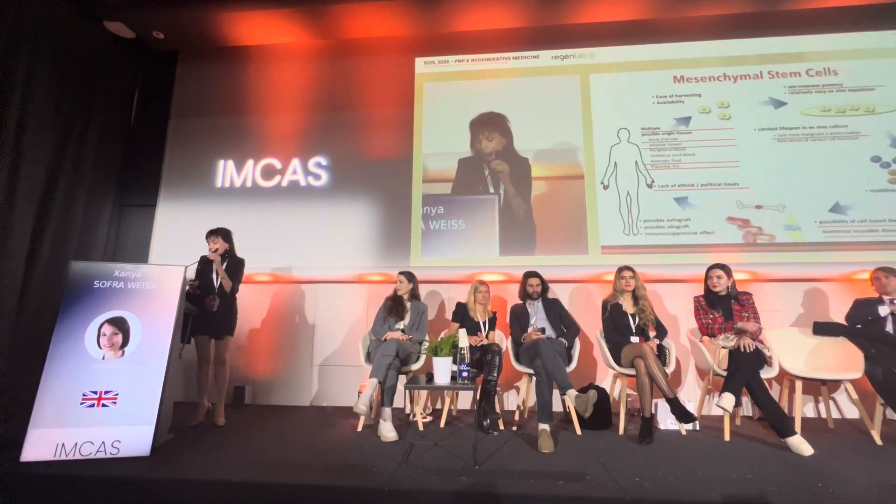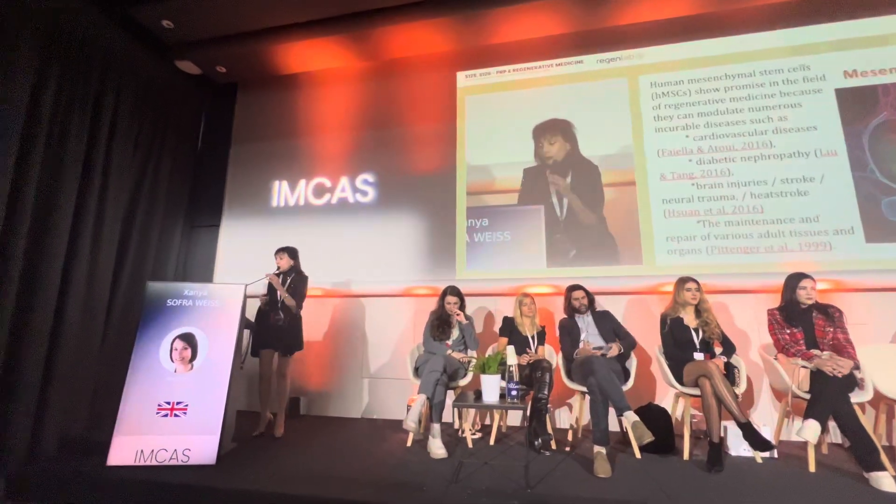The safest stem cells are the mesenchymal stem cells. They are more available because you can get them from adipose tissue, from amniotic fluid, and from many different sites. Mesenchymal stem cells have been used extensively to treat several disorders like diabetic disorders, cardiovascular disorders, and brain tumors. The difficulty with mesenchymal stem cells is the heterogeneity, and also who is injecting them, because the passage and culture also affect the phenotype of the cell.